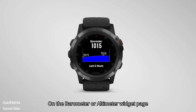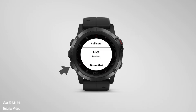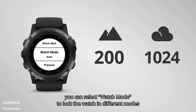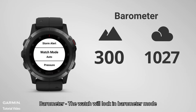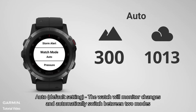On the barometer or altimeter widget page, press the start button to enter the setting page. You can select watch mode to lock the watch in different modes. Altimeter: the watch will lock in altimeter mode and all changes in pressure will impact the elevation reading. Barometer: the watch will lock in barometer mode and all changes in pressure will be considered due to weather and changes in ambient pressure. Auto: the watch will monitor changes and automatically switch between the two modes.